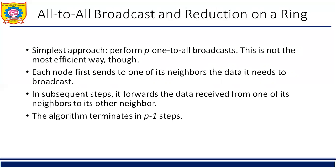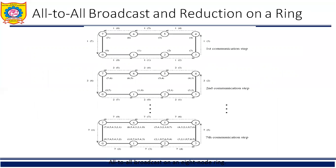Now, all-to-all broadcast and reduction on a ring. This section describes all-to-all broadcast on linear array, mesh, and hypercube topology. While performing all-to-all broadcast on a linear array, also called a ring, all communication links can be kept busy simultaneously until the operation is complete, because each node always has some information it can pass along to its neighbor. Each node first sends to one of its neighbors the data it needs to broadcast; in subsequent steps it forwards the data received from one neighbor to its other neighbor. This figure illustrates all-to-all broadcast for an 8-node ring.